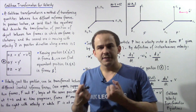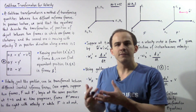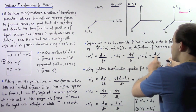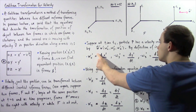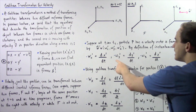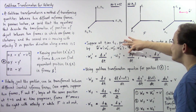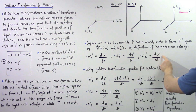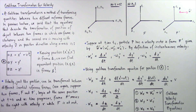What exactly is the definition of velocity? Instantaneous velocity is the rate of change of displacement with respect to time. This gives us three equations: w prime x equals the derivative of x prime with respect to time; w prime y equals dy prime over dt; and w prime z equals dz prime over dt. These will become important in just a moment.